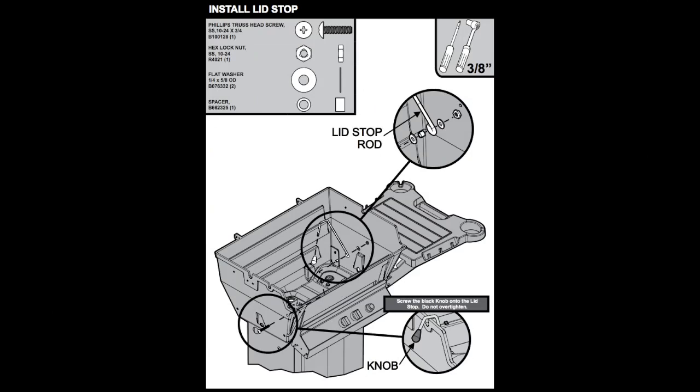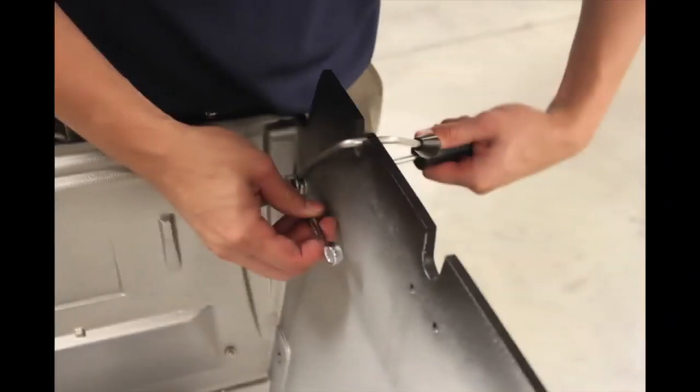If you have a lid prop, install it now with the black knob outside the grill and nuts and spacer inside. Make sure you have the washers, spacer and nut in the correct sequence.